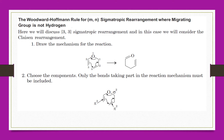Choose the components. Select the component — only the bonds taking part in the reaction mechanism must be included. The one side is the pi system on the left side and the pi system on the right side. The two pi systems and a sigma system are the components.